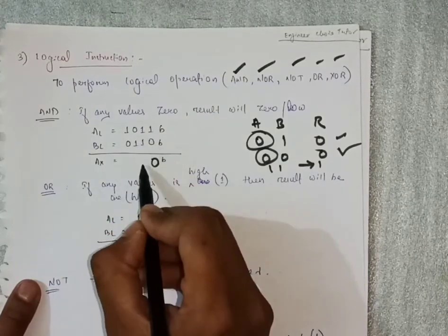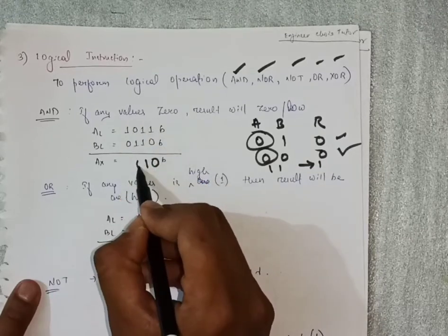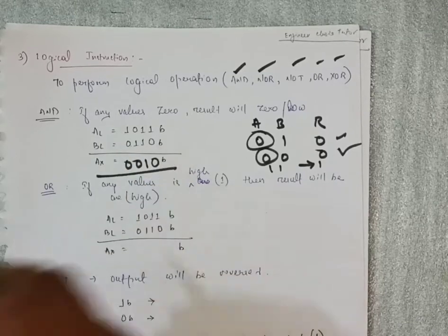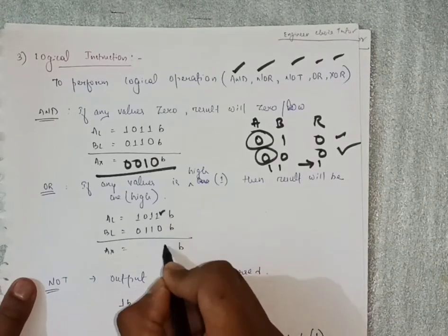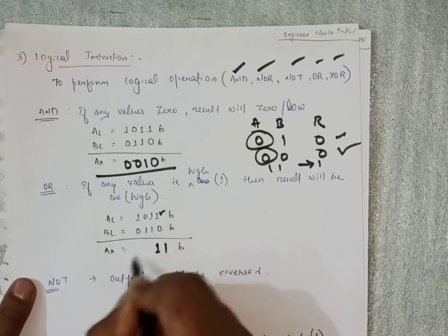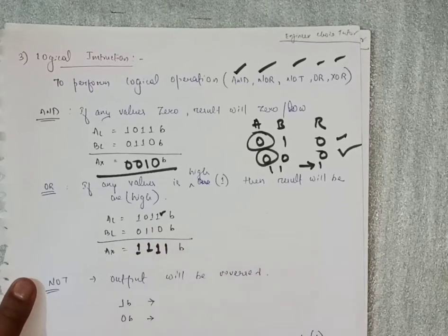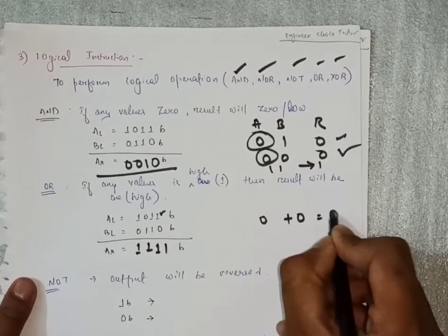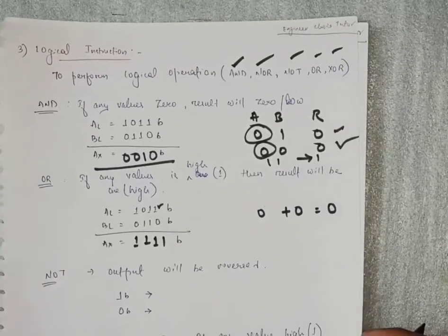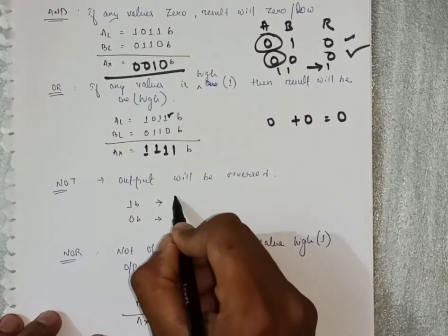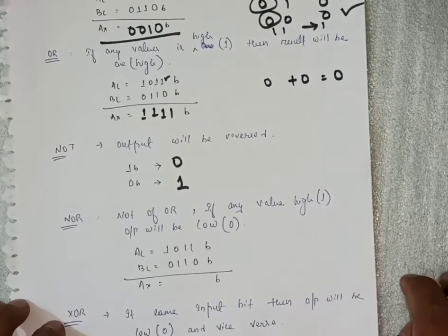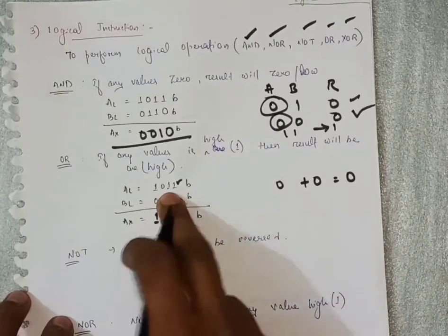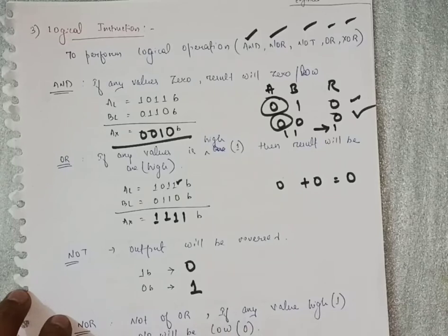For OR: if any value is high (1), the result will be high. So 1,0 → 1; 1,1 → 1; 0,0 → 0. For NOT: the output is simply reversed — one becomes zero and zero becomes one. For NOR: it is NOT of OR. The best way is to first calculate OR, then apply NOT — whatever result OR gives, NOR gives the opposite.